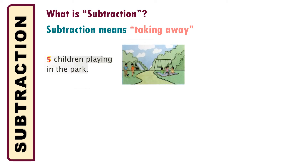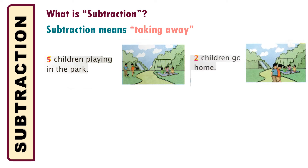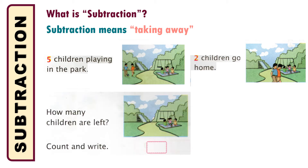Suppose five children are playing in the park. If you see in the picture, you can see that five children are playing. Among them, two children go home. If you look at the picture, you can see two children are going home. So how many children are left? Count and write. There are one, two, three — three children are left.